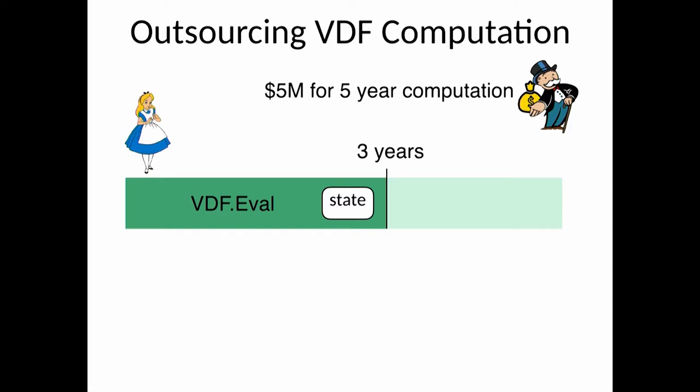What you ideally want to do is for Alice to take her intermediate state, sell it to somebody else, say Bob, for $3 million, and Bob would be able to continue the computation for Alice, and maybe after five years win the $5 million reward.